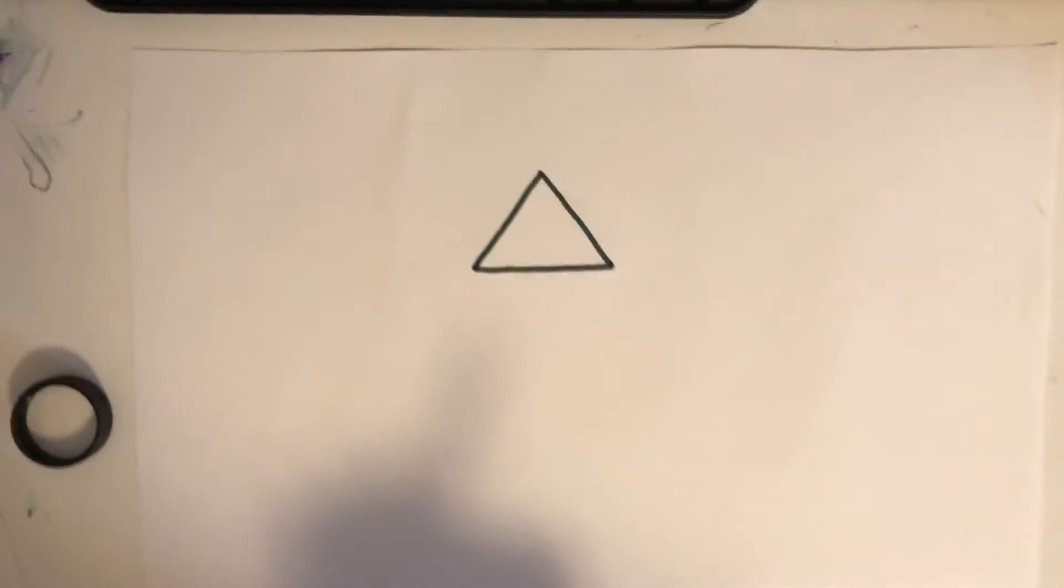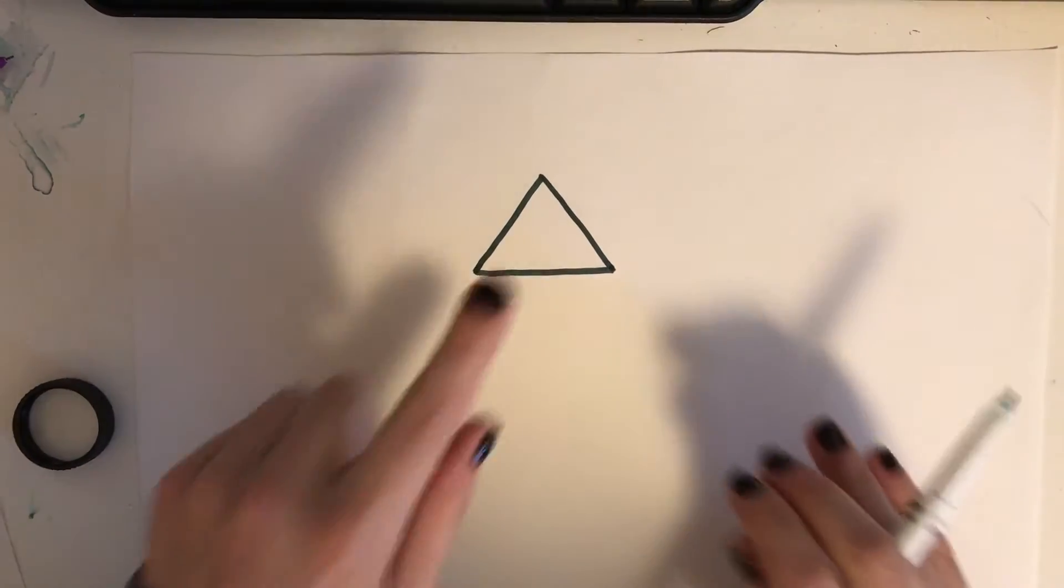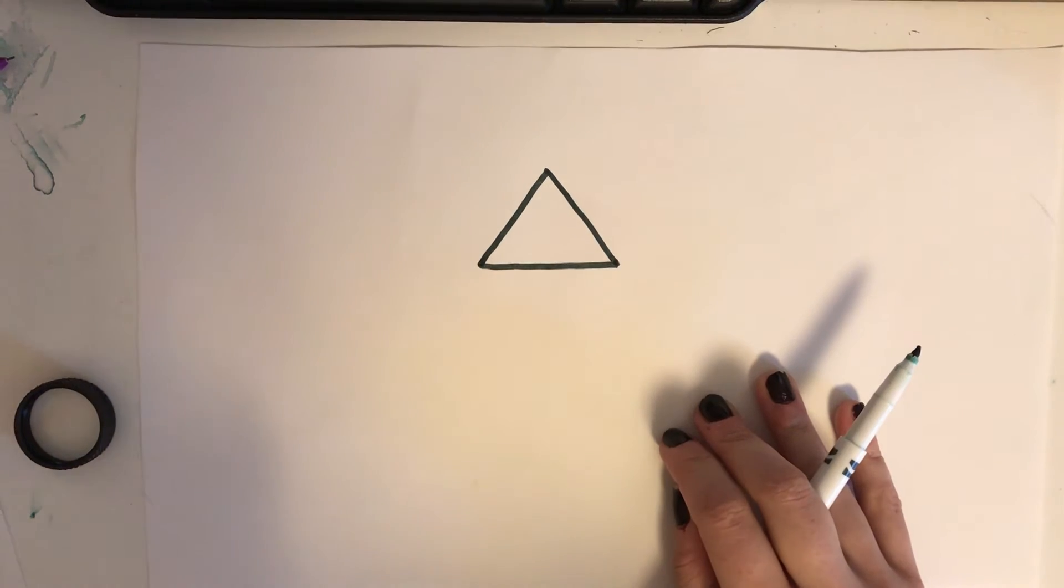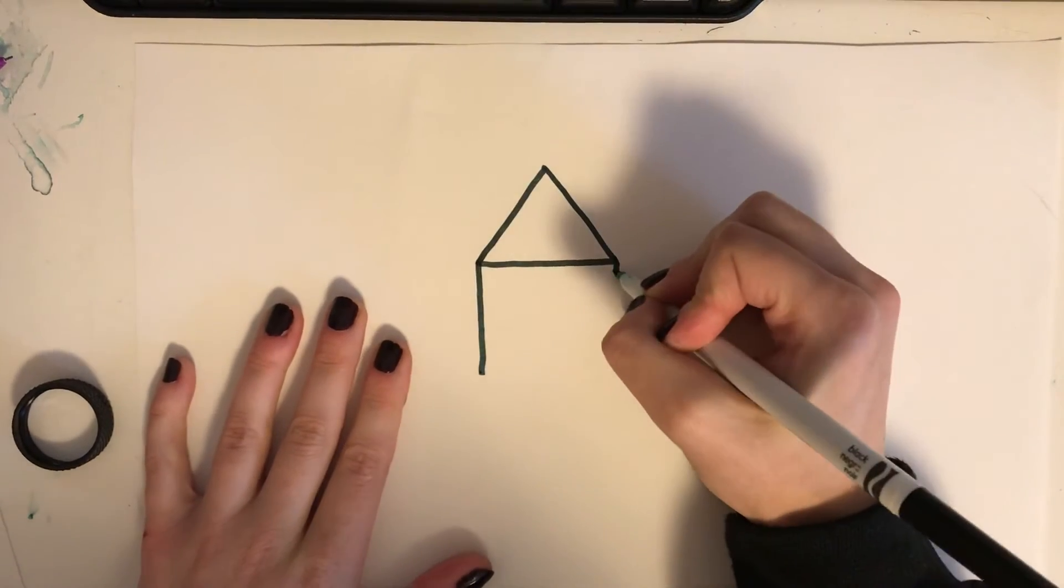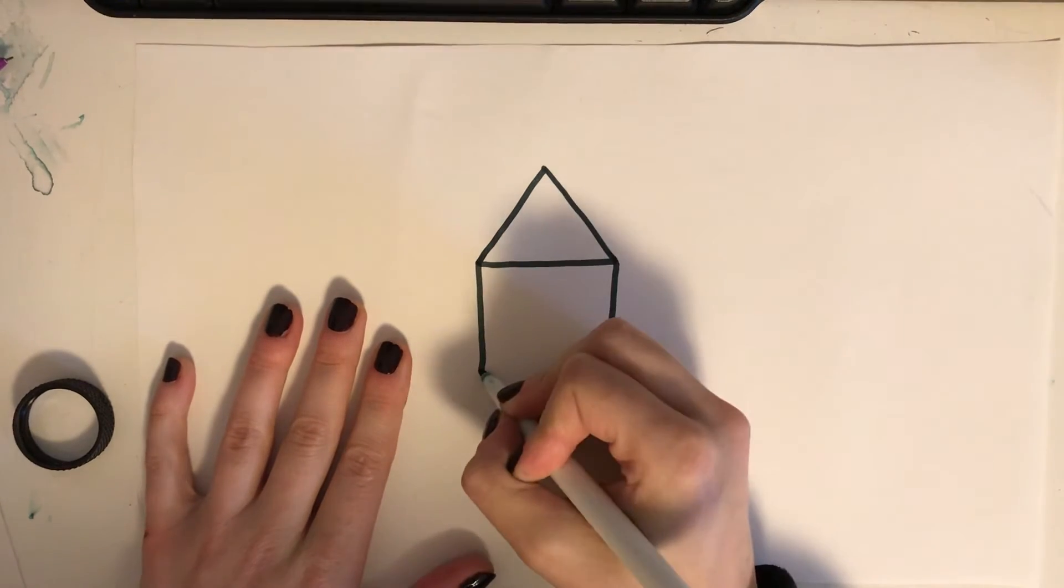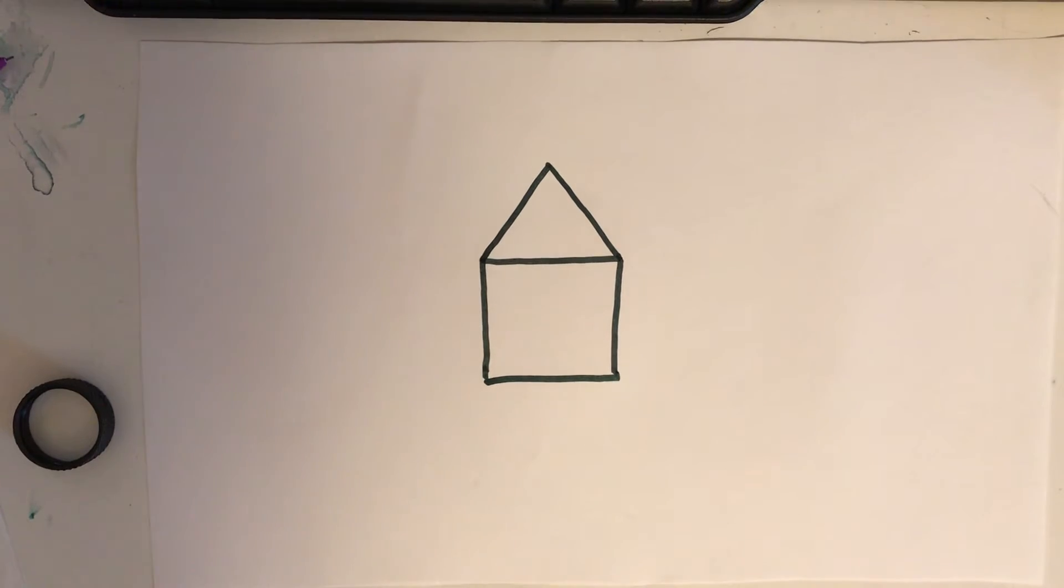Now we have a triangle and we're going to add something to it underneath. I'm making two vertical lines going down, and then I'm closing them to make a square.